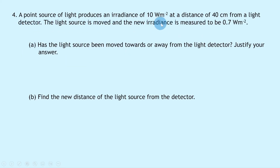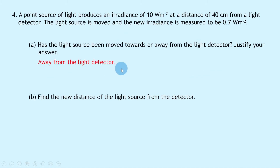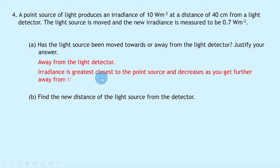Question 4 says: a point source of light produces an irradiance of 10 W/m² at a distance of 40 cm from a light detector. The light source is moved and the new irradiance is 0.7 W/m². Part a asks whether the source has been moved towards or away from the detector. The irradiance drops from 10 to 0.7 W/m², so the light source has been moved away from the detector, since irradiance is greatest closest to the source and decreases with distance.